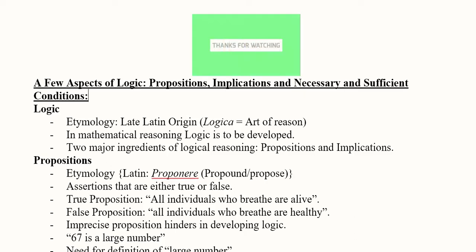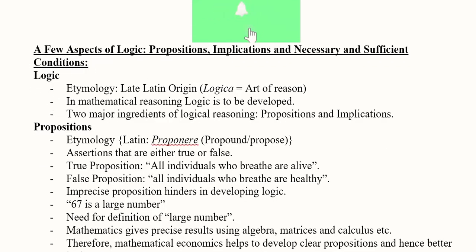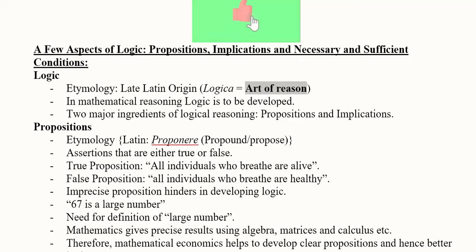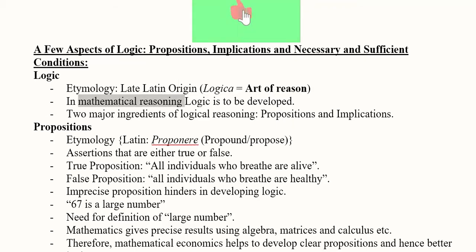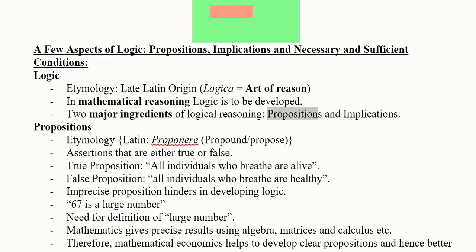After understanding the ingredients of a mathematical model, let us shed some light on logic in mathematical economics. There are a few aspects of it, out of which we are studying three: propositions, implications, and necessary and sufficient conditions. Logic, from its Latin origin, is the art of reason — how we reason and explain an argument. In mathematical reasoning, there are two key ingredients: propositions and implications.